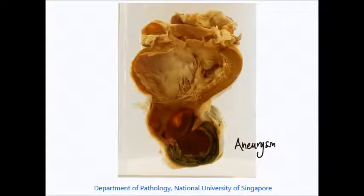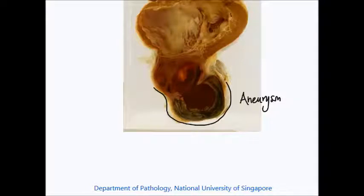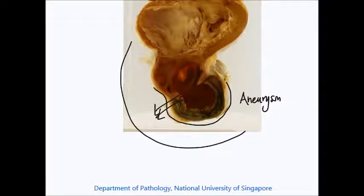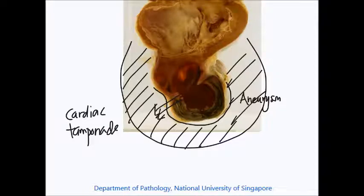Let's think about what are some of the potential consequences of such a pathology. If you notice that in this area, in the aneurysm itself, the wall is actually very thinned, and this is very dangerous, which could potentially lead to rupture. When the blood exits the wall of the left ventricle, it gets entrapped in the pericardial sac. This is a condition known as cardiac tamponade and is rapidly fatal.